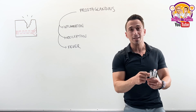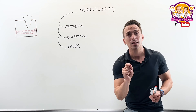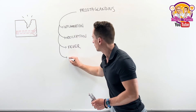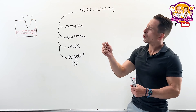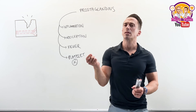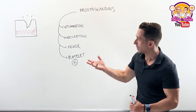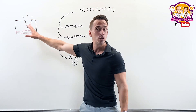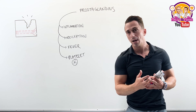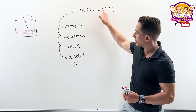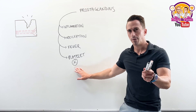Prostaglandins can also inhibit platelet aggregation. Platelets are fragments of cells in our bloodstream that play an important role in clotting. When you have damage to vascularized tissue, platelets come in and help clot that area up. But prostaglandins can inhibit this process.